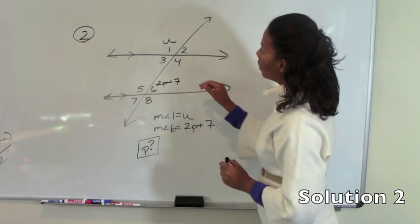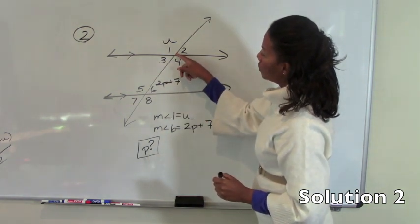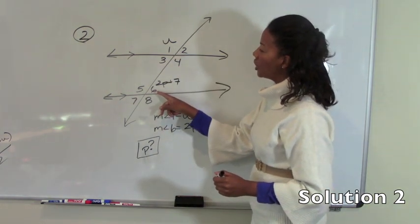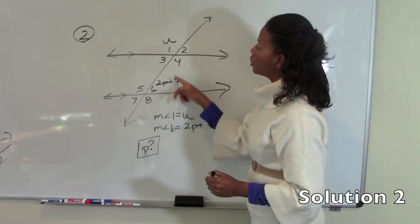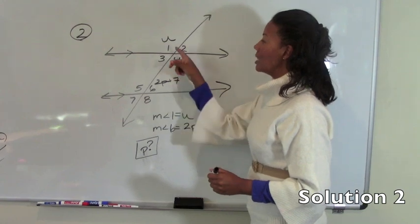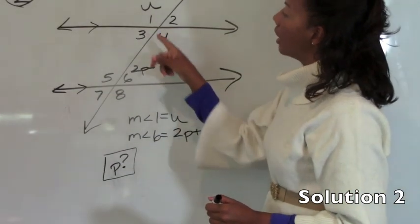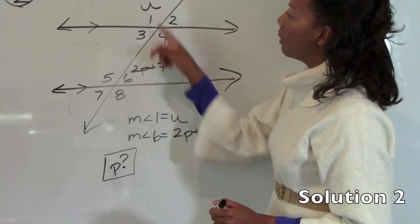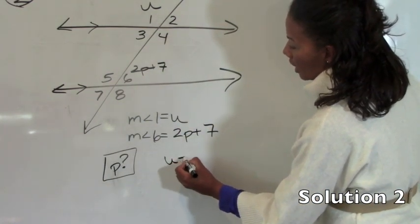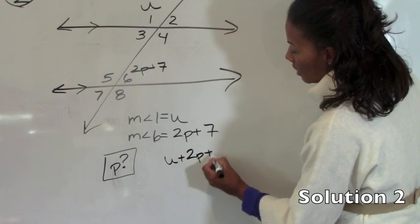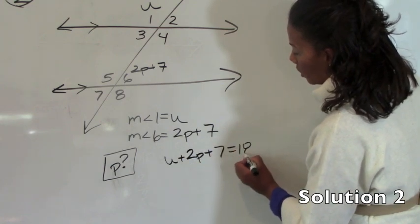You will see that one of our angles is obtuse and our other angle is acute. So they are not equivalent. If our two angles are not the same then they are supplementary. Any obtuse angle with any acute angle is supplementary. So that means we can form an equation: u plus 2p plus 7 equals 180 degrees.